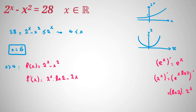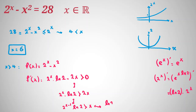We want to show f prime of x is positive. This is equivalent to showing 2 to the x times ln 2 is greater than 2x. Dividing both sides by 2, we get 2 to the x minus 1 times ln 2 greater than x, which is equivalent to ln 2 being greater than x over 2 to the x minus 1. We know that ln 2 is greater than one-half.